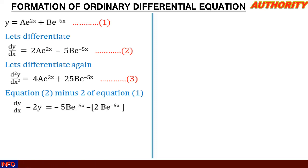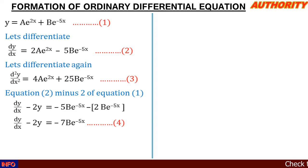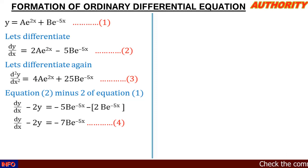For the next term: -5be^(-5x) minus 2be^(-5x). We get -5b - 2b = -7b. So we have dy/dx - 2y = -7be^(-5x). Let's call this equation four.